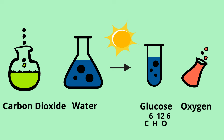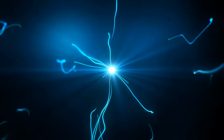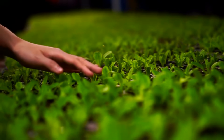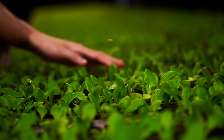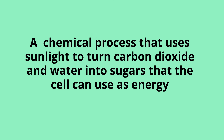The sugar created in the chemical reaction called photosynthesis is used by the plant to create energy. You could define photosynthesis as the process by which plants and other organisms make food — a chemical process that uses sunlight to turn carbon dioxide and water into sugars that the cell can use as energy.